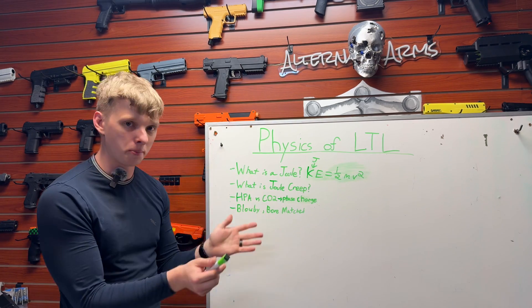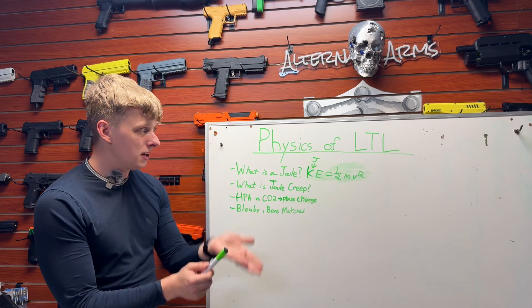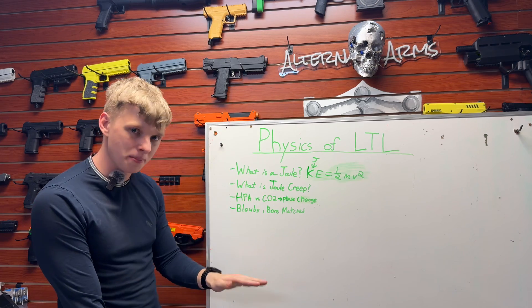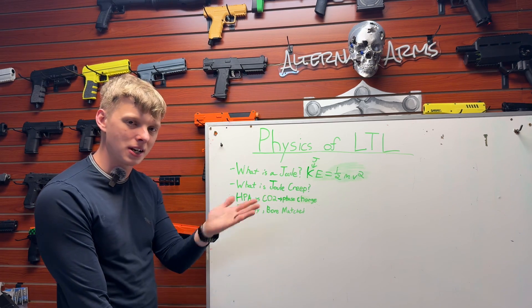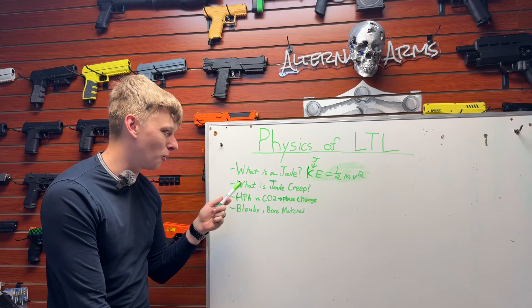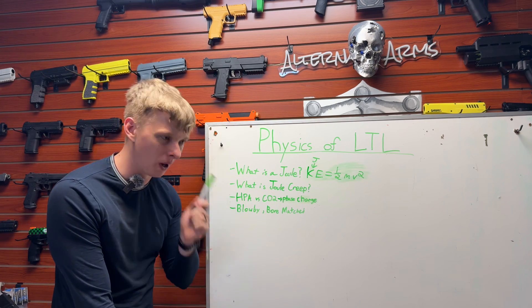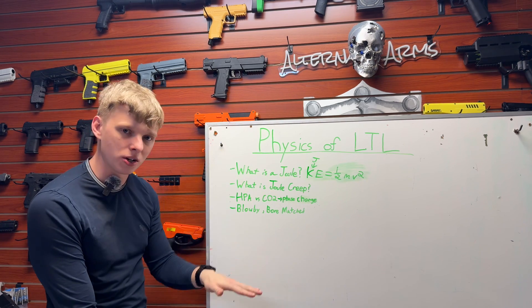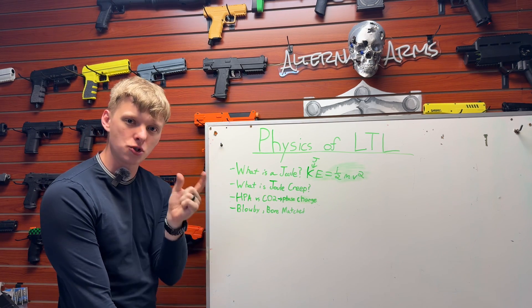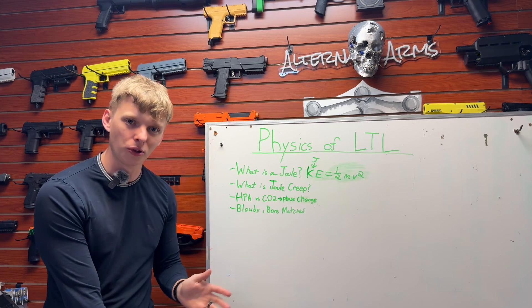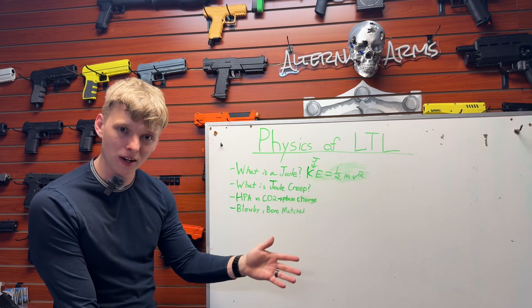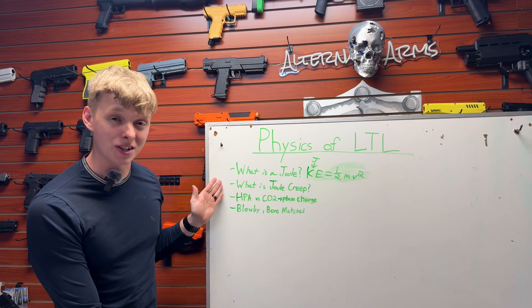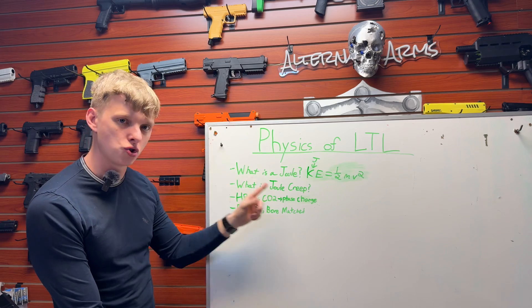In this case it's directly proportional. If you increase the mass, you're going to see a decrease in velocity. If you decrease the mass, you're going to see an increase in velocity. Now, this is in an ideal circumstance — I'm about to show you the exception to that rule. In an ideal circumstance, as you increase the mass you will see a decrease in velocity, assuming that joule count is constant. Since we're talking about less than lethal, in an ideal scenario the joule count should be constant. We're going to talk about the exception to that rule, and that is joule creep.